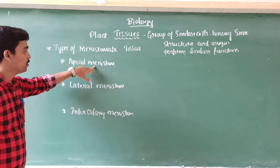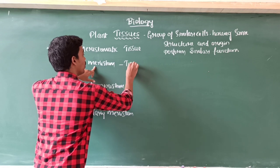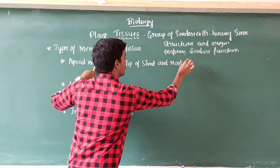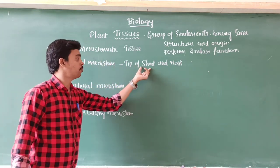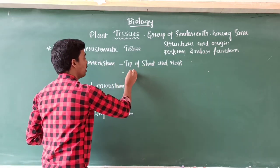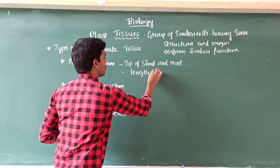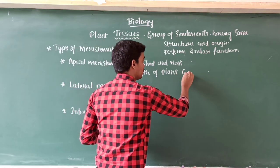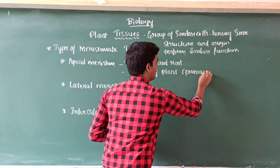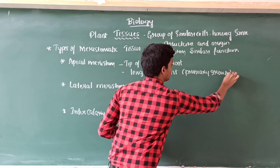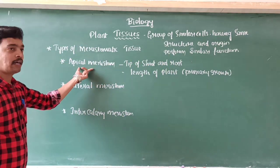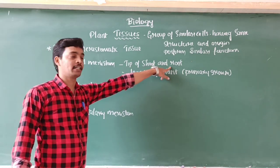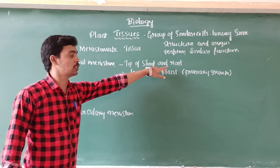The first type is apical meristem. It is present at the tip of the shoot and root. The shoot is nothing but the stem tip or branches at the tip. It causes elongation — it helps to increase the length of the plant body. In other words, it is called primary growth. Apical meristem is present at the tip of the shoot as well as at the tip of the root.